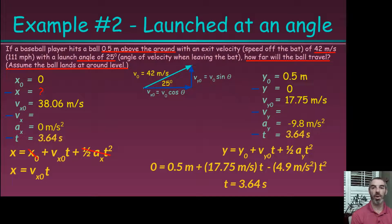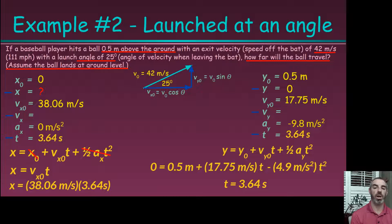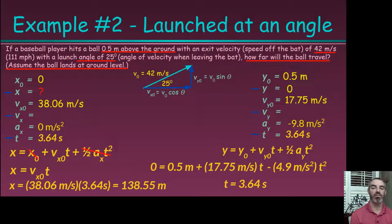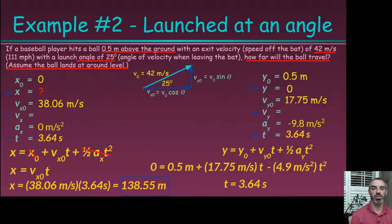That 3.64 seconds is not just the flight time in the y direction — it's also the flight time in the x direction. Now that I know the time the ball is in the air, I multiply the horizontal velocity by the time. The seconds cancel, leaving meters: 138.55 meters, which is approximately 450 feet. There are other real-world factors not accounted for, but that's the calculated range.